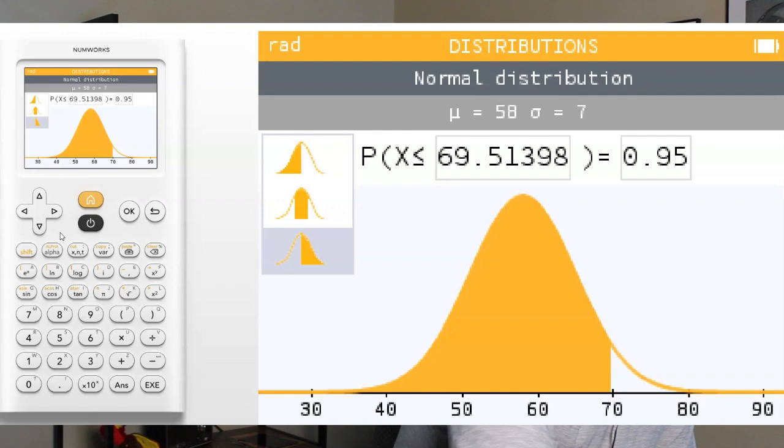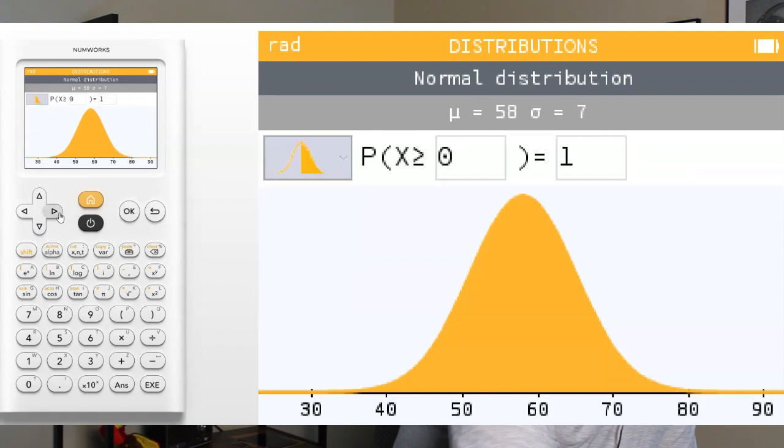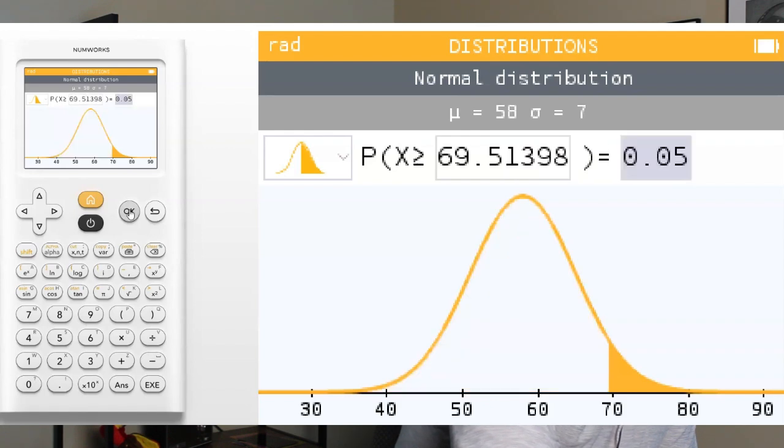Or we could actually go over to the options for left, center, and right, click on above, and this time we're going to type in 0.05 for 5% above, and we get that same value of 69.51398.